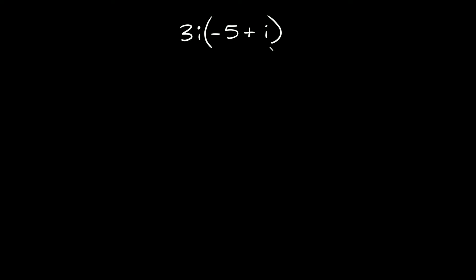So we have 3i times, in parentheses, negative 5 plus i. The first thing we want to do here is just distribute this 3i into these set of parentheses. So 3i times negative 5 is equal to negative 15i, and then 3i times positive i is equal to positive 3i squared.